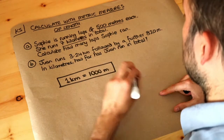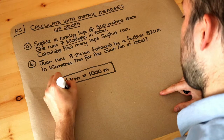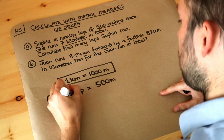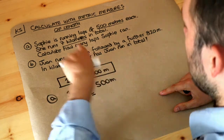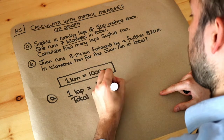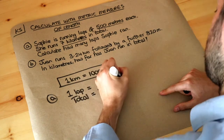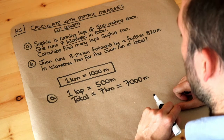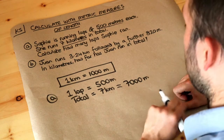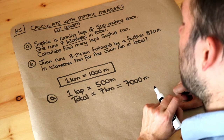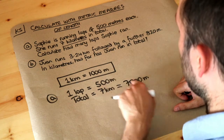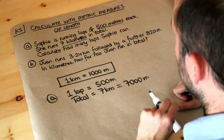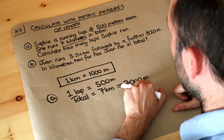Sophie is running laps of 500 metres, so one lap is 500 metres. In total she runs seven kilometres. Since one kilometre is a thousand metres, seven kilometres is 7,000 metres. If one lap is 500 metres and we want to find how many laps fit in 7,000 metres, we need to see how many times 500 goes into 7,000.